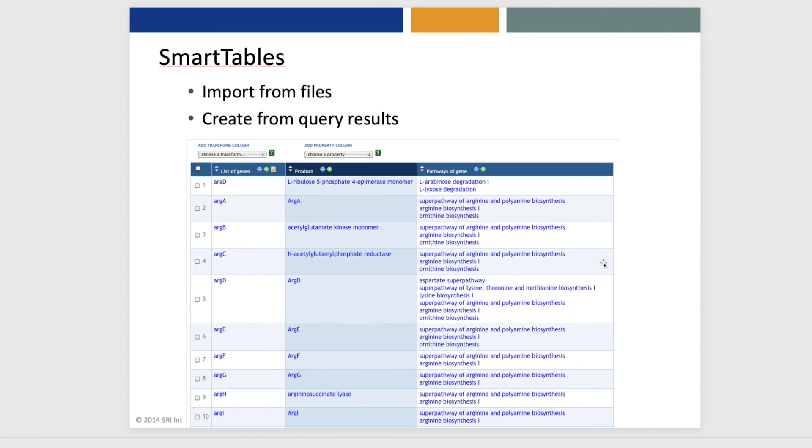For example, here's a gene Smart Table that was imported from a file. And we're looking at the name of the gene, the name of the gene product, and we've added a transformation that shows for each gene the pathways that that gene is involved in.